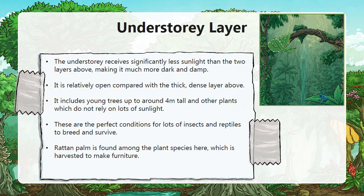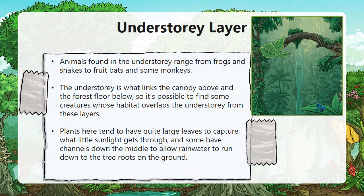Let's look at the understory. The understory receives significantly less sunlight than the two layers above, making it much more dark and damp. It is relatively open compared with the thick dense layer above. It includes young trees up to around four meters tall and other plants which do not rely on lots of sunlight. These are perfect conditions for lots of insects and reptiles to breed and survive. The rattan plant is found among the plant species here, which is harvested to make furniture.